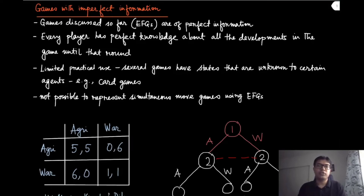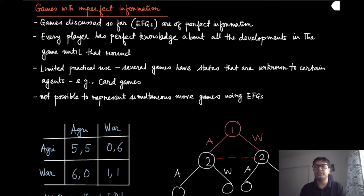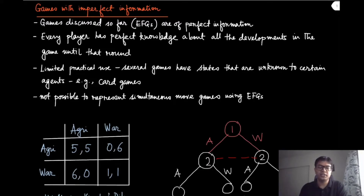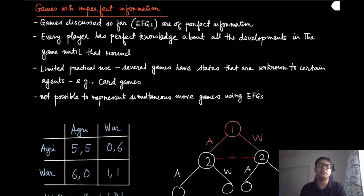We have discussed games with perfect information so far. Perfect information means that every player has perfect knowledge about the developments in the game until that round — the current state, the actions played by each player, and so on. However, this has very limited practical use. It may not represent certain kinds of games, like card games, where you cannot observe the complete state of the game. So we need a richer representation than the perfect information game.